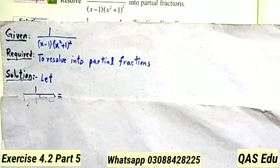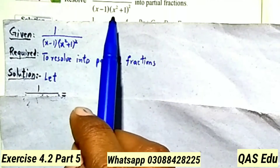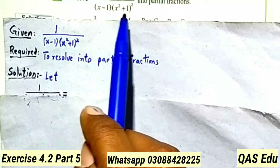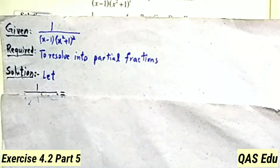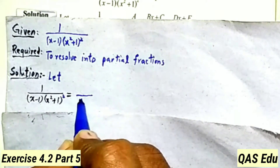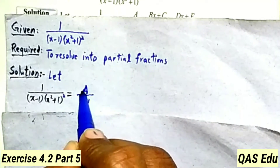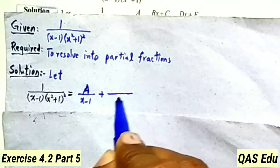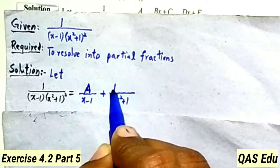In the solution, suppose x minus 1 is a linear factor. The quadratic factor x square plus 1 is a repeated quadratic factor. For the linear factor x minus 1, the numerator will be a constant A.